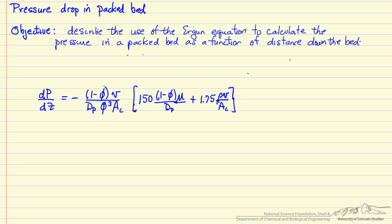So what we use to calculate the pressure drop, or the pressure as a function of distance down the reactor, is the Ergen equation, and the Ergen equation is written here. I'm going to describe the terms.